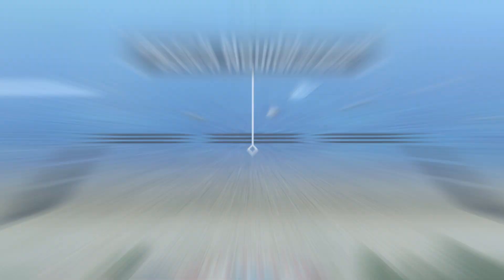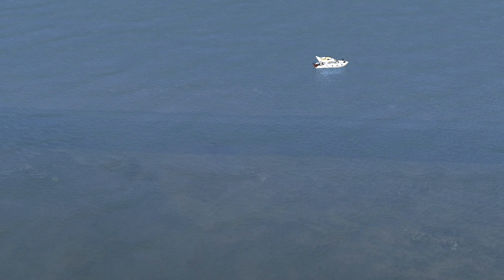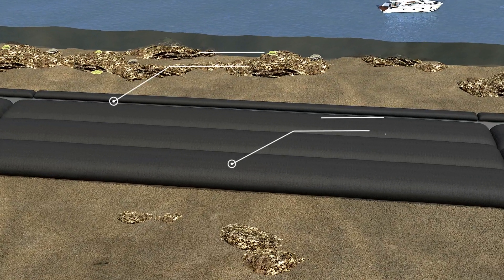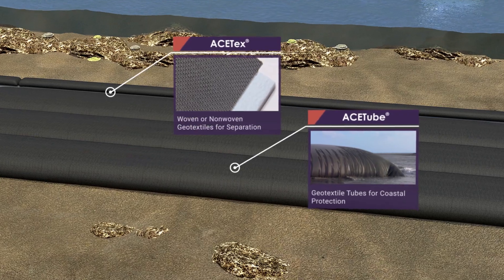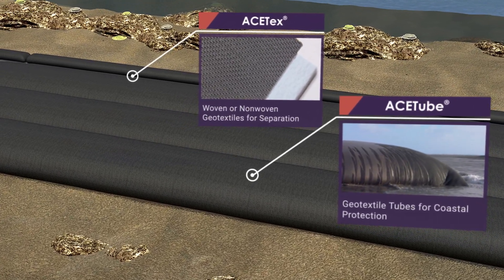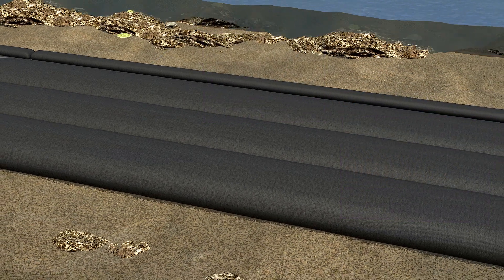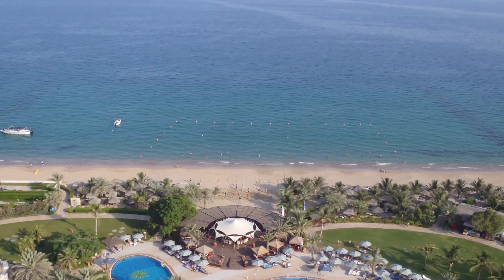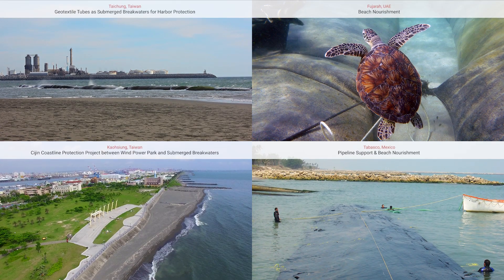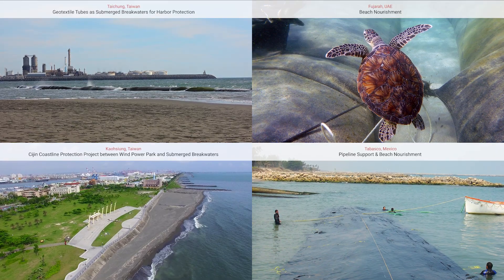Beach Nourishment: Utilizing ACE tube geotextile tubes to build offshore breakwaters, submerged breakwaters, long dikes and other hydraulic structures can encourage littoral sands to accumulate and nourish and extend existing beaches. ACE tube geotextile tube is highly water permeable and efficient to install. The malleable contours may conform to the terrain and increase its ability to resist erosion caused by seawater.